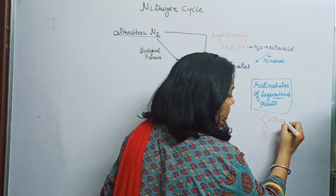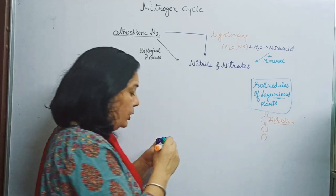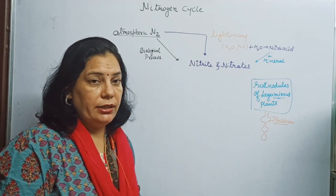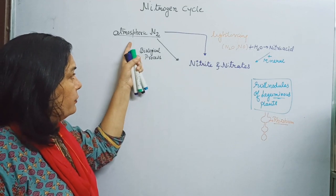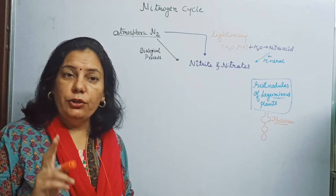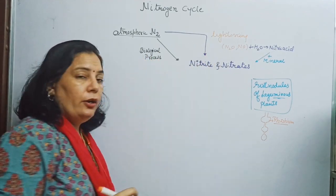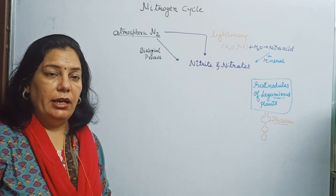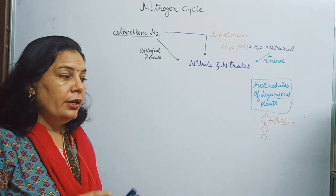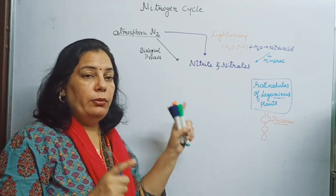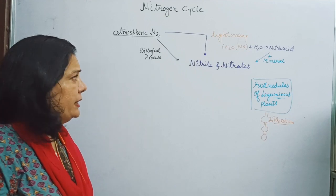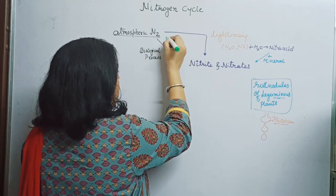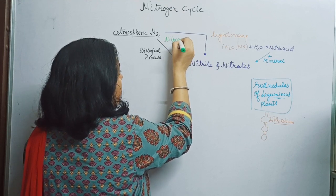The name of these bacteria is Rhizobium bacteria. The role of Rhizobium bacteria is to convert atmospheric nitrogen into nitrites and nitrates. So the conversion of nitrogen into nitrites and nitrates is done by two processes: first is lightning, and second is the biological process carried out by Rhizobium bacteria found in root nodules of leguminous plants.